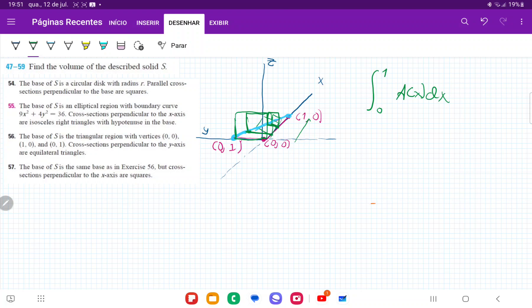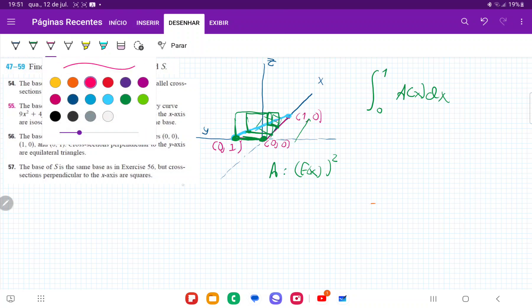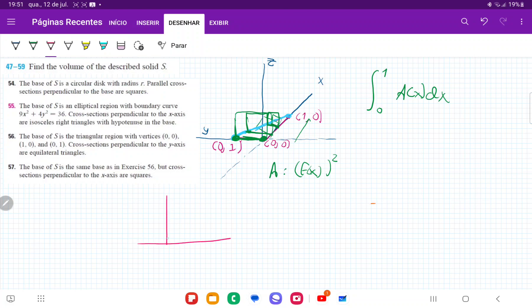The area is going to be the side squared, which is f(x)². Because f(x) is the height of this function—it's the distance from here all the way out to this point. So now that we know it's f(x), we just need an expression for that function. This line connects the point (0,1) to the point (1,0).